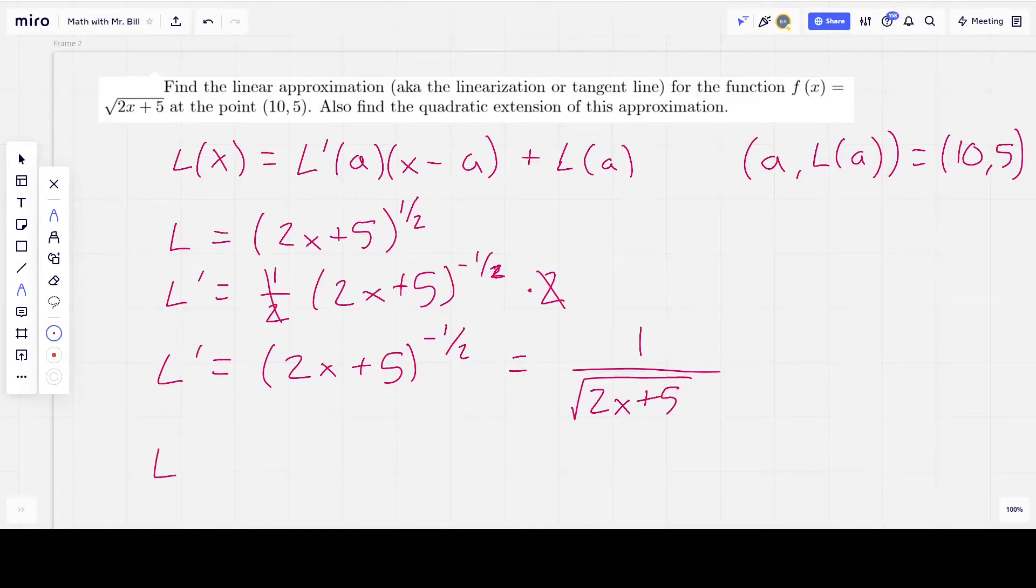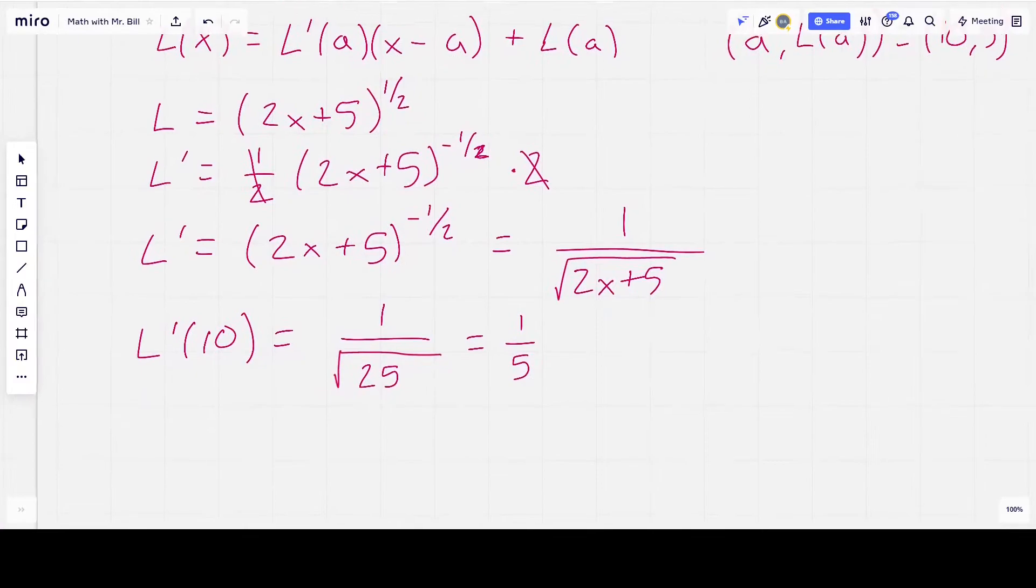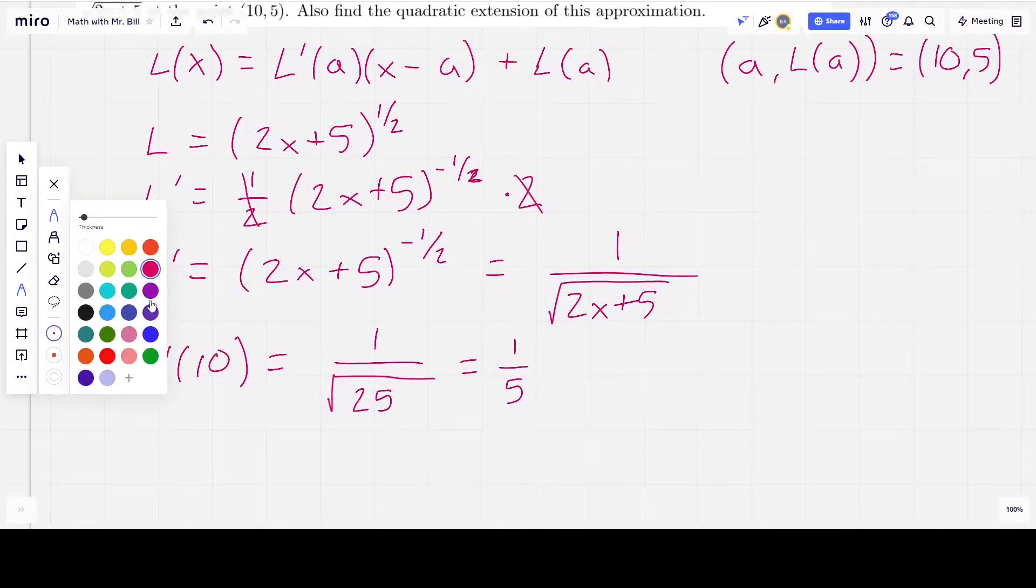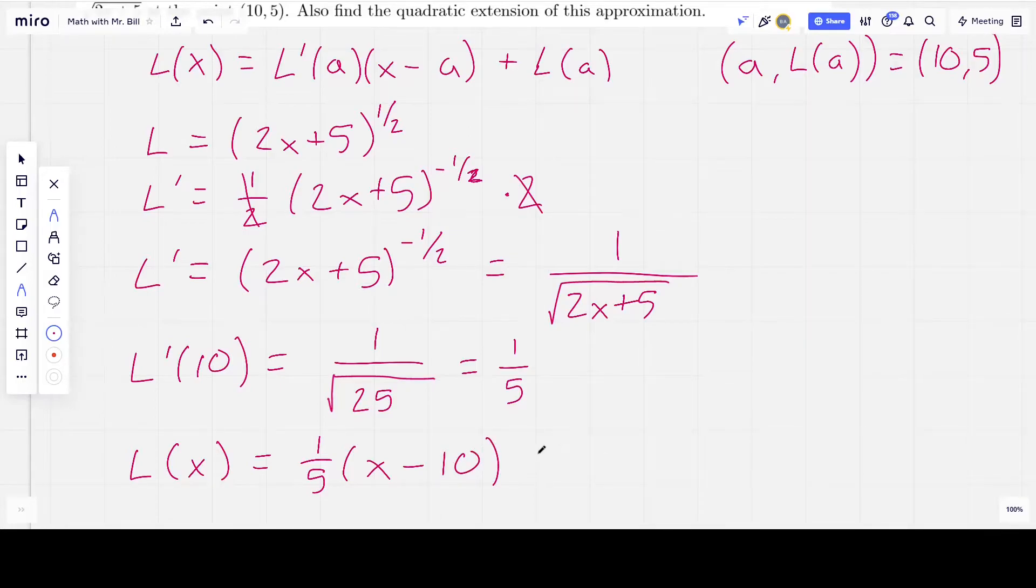Now let's find L prime of a, and a is 10. So, L prime of 10 is equal to 1 over the square root of 2 times 10, which is 20, plus 5. So, it's 1 over the square root of 25, which is 1/5. So, we've got all the pieces now. L(x), our linearization function, is equal to L prime at a, which is 1/5, times (x minus a), and a is 10, plus L(a), which is 5. That's it. Now, you can expand it out a little bit if you want to, but you should be good with that.